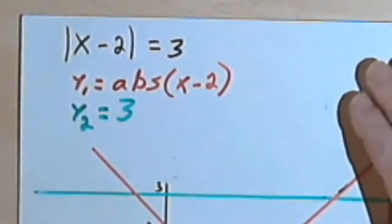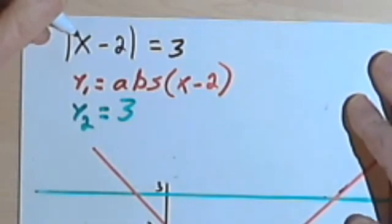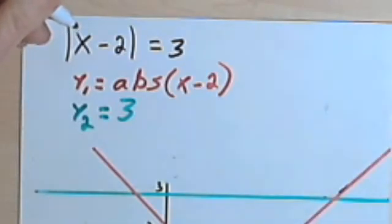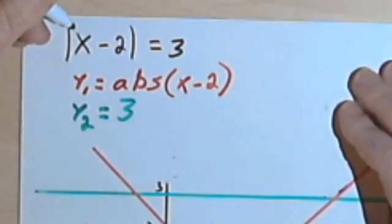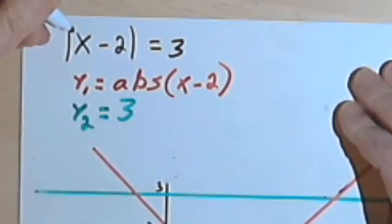Okay, so let's say we're starting out and we've got this problem. The absolute value of x minus 2 equals 3. And we're told to solve it graphically. Well, here's what we're going to do.